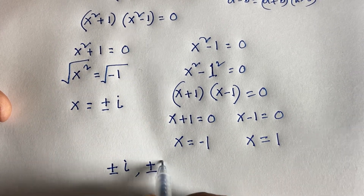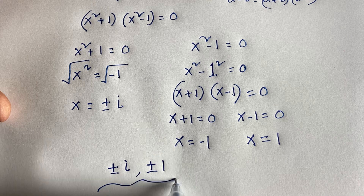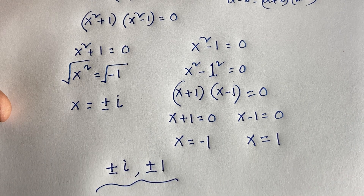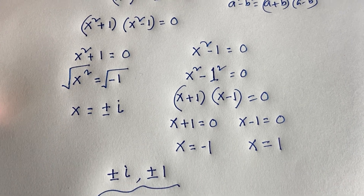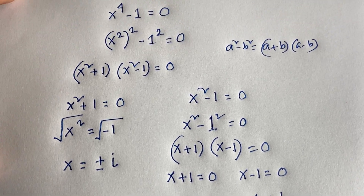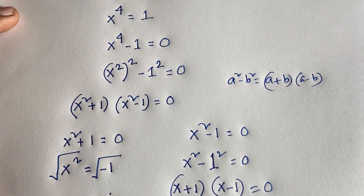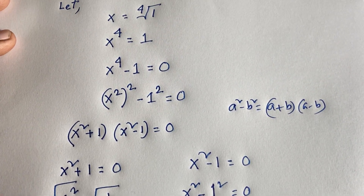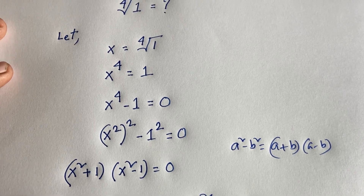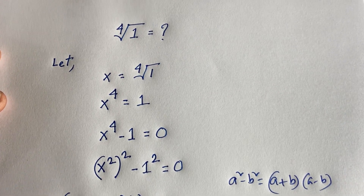Our final answer is x equals plus or minus i and plus or minus 1. This is our complete solution to this exponential equation. Thank you all — if you enjoyed this video, please subscribe to my channel for more interesting videos. Goodbye, take care.